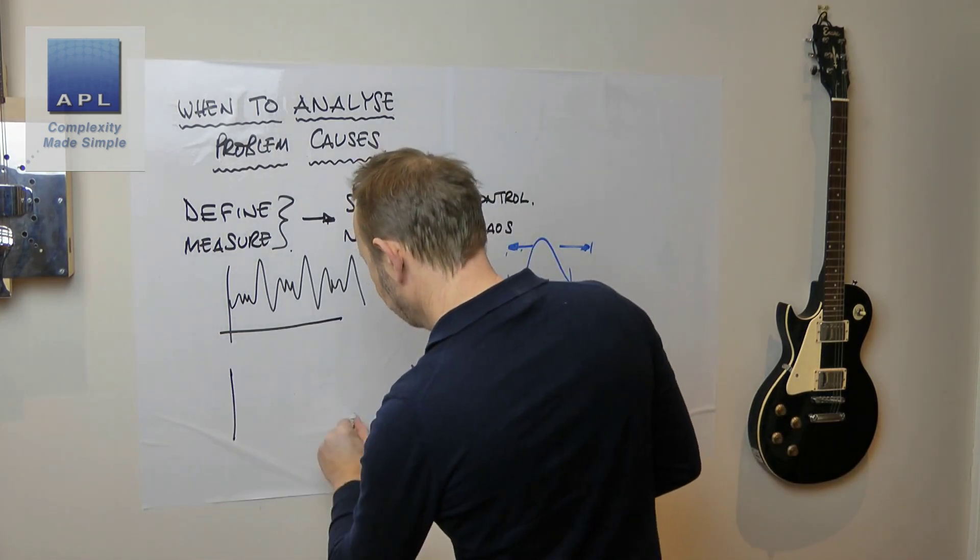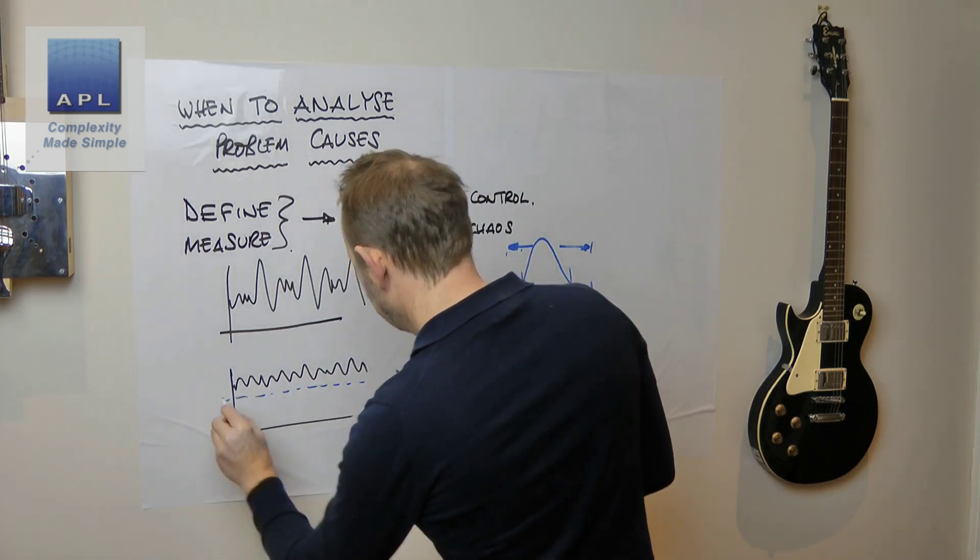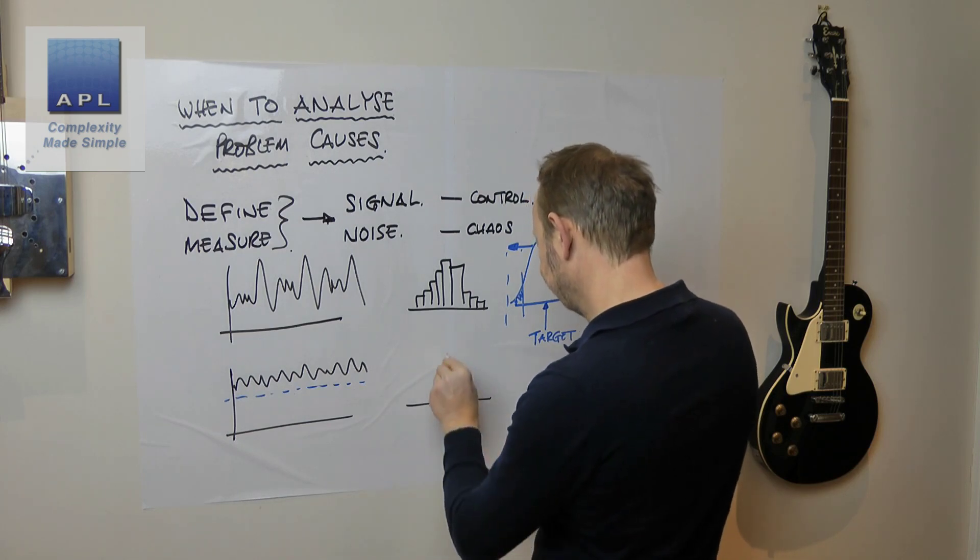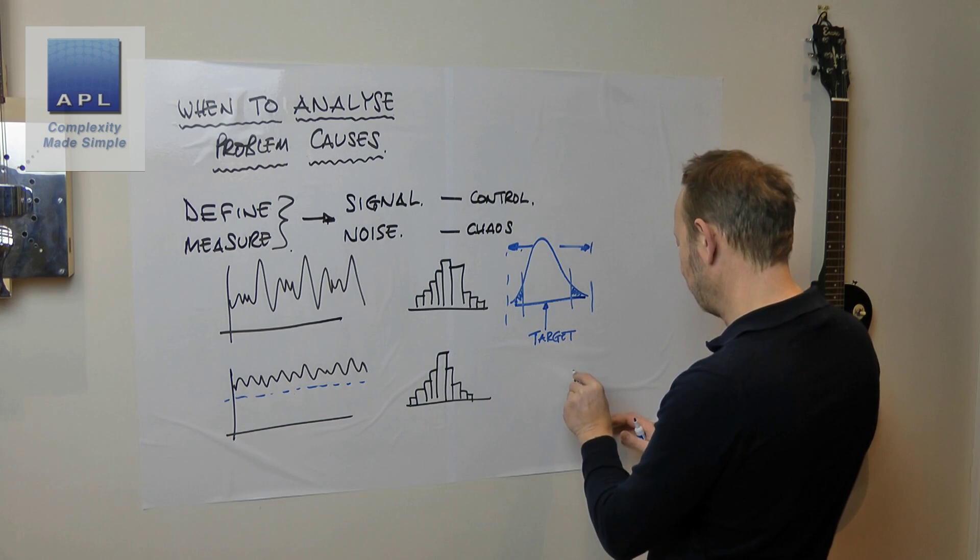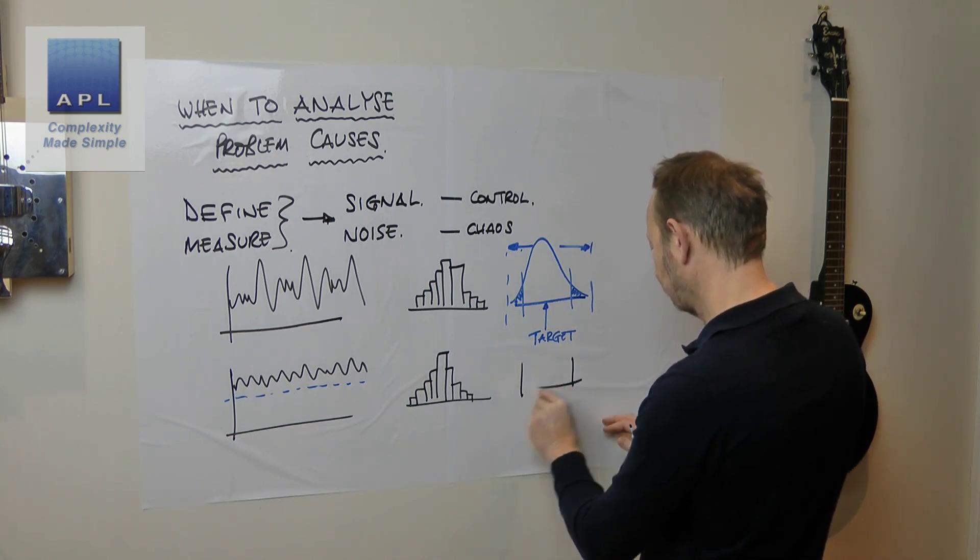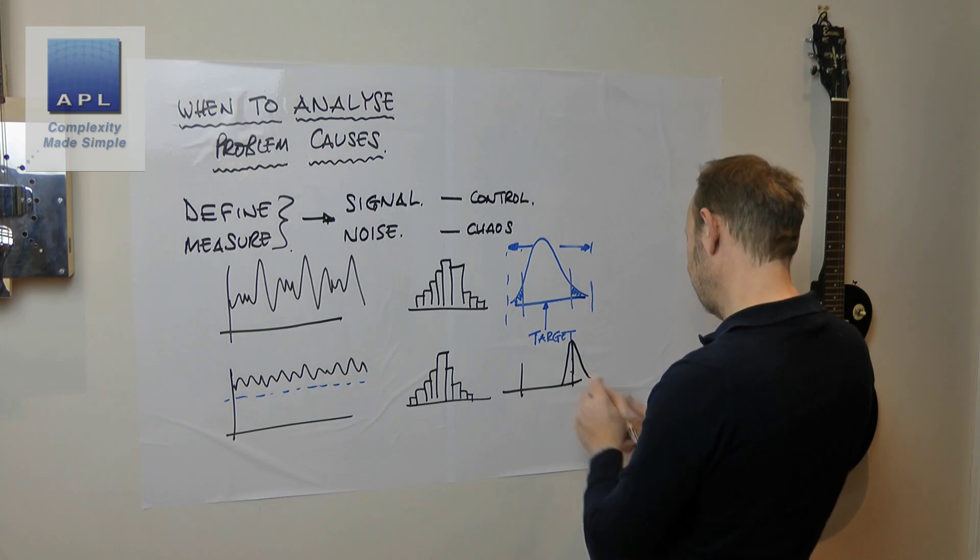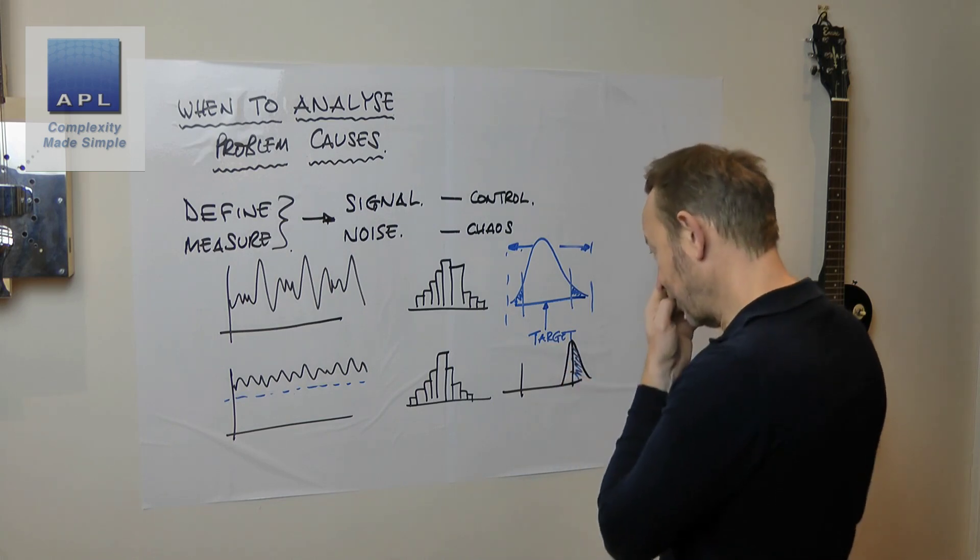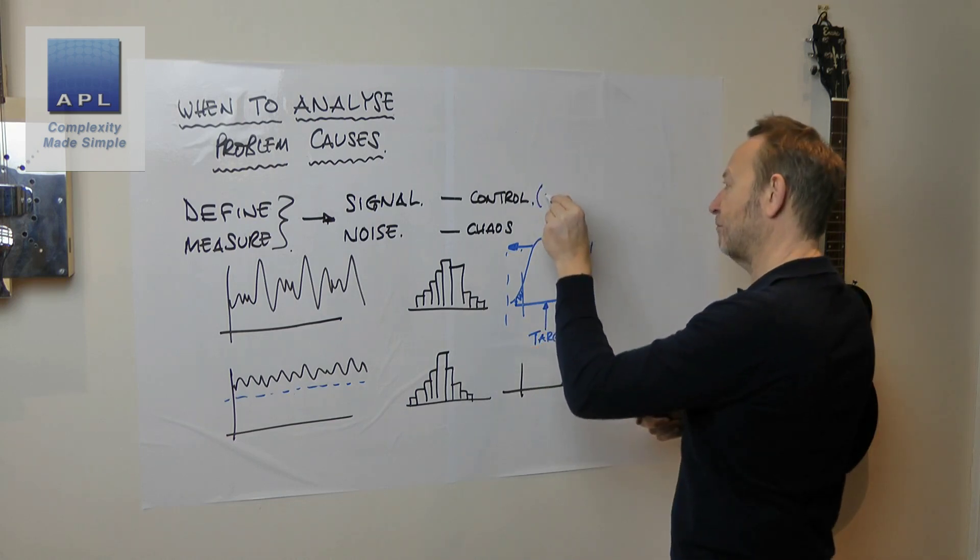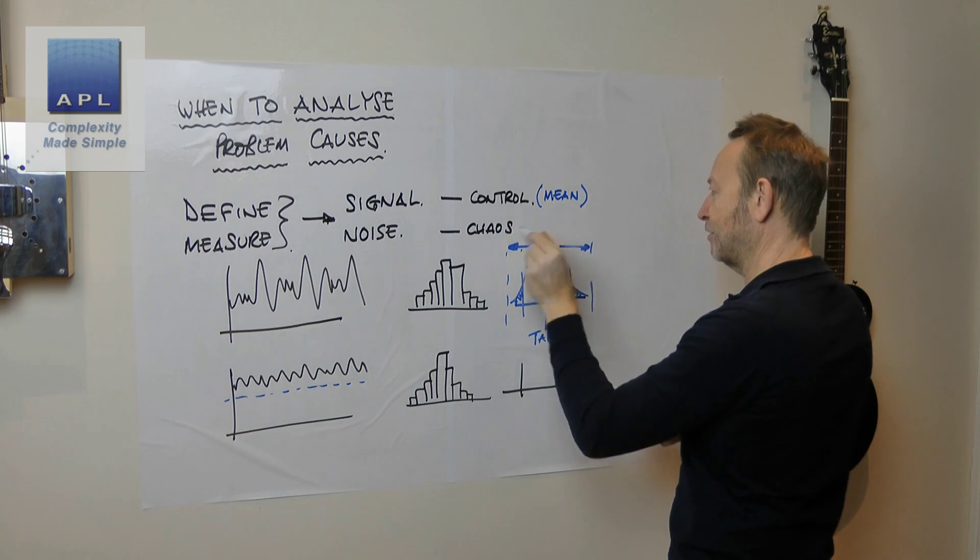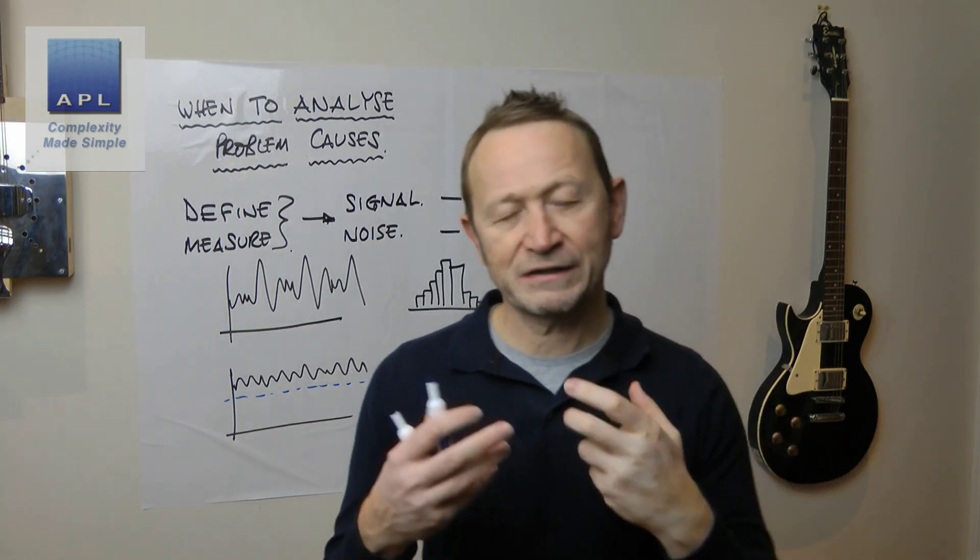But how about if what we've got is a different looking performance? So maybe it looks like this. Maybe that's the target. Of course, I'm going to draw a histogram just to make sure the data looks sensible. But then when I do the CPK diagram, of course, what I'm going to get is something that's looking very high. So lots of defects over this side. Now that is a problem with signal. We're not centered. The signal is about moving the average, moving the mean. The chaos is about changing the standard deviation.